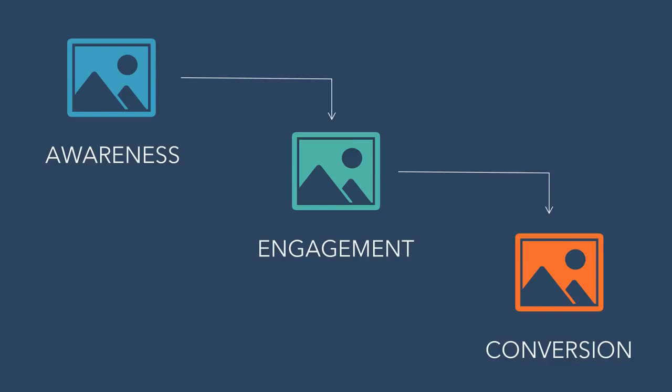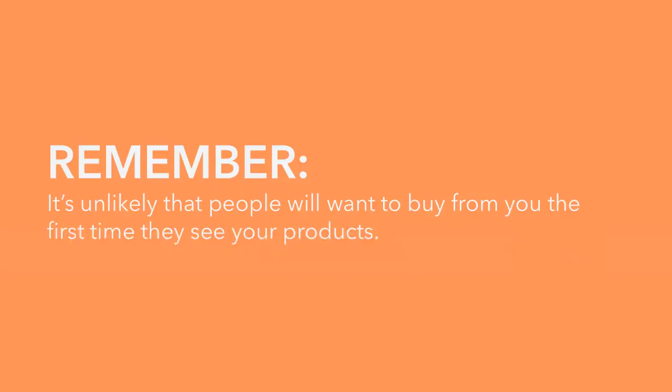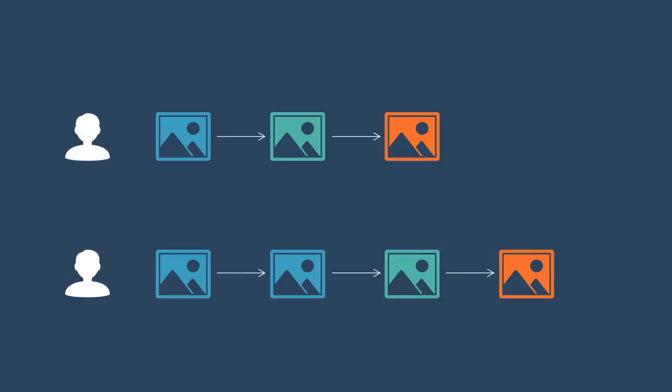With ads in all three of these stages, you'll be able to move people through ad sequences, starting with awareness, then engagement, then conversion. That way, the first ad they're seeing from you isn't a conversion ad that's trying to get them to buy. Maybe they're not ready to buy. It's unlikely that people will want to buy from you the first time they see your products. Instead, for every given person, your ad sequences will show an awareness ad first, then an engagement ad, then a conversion ad.